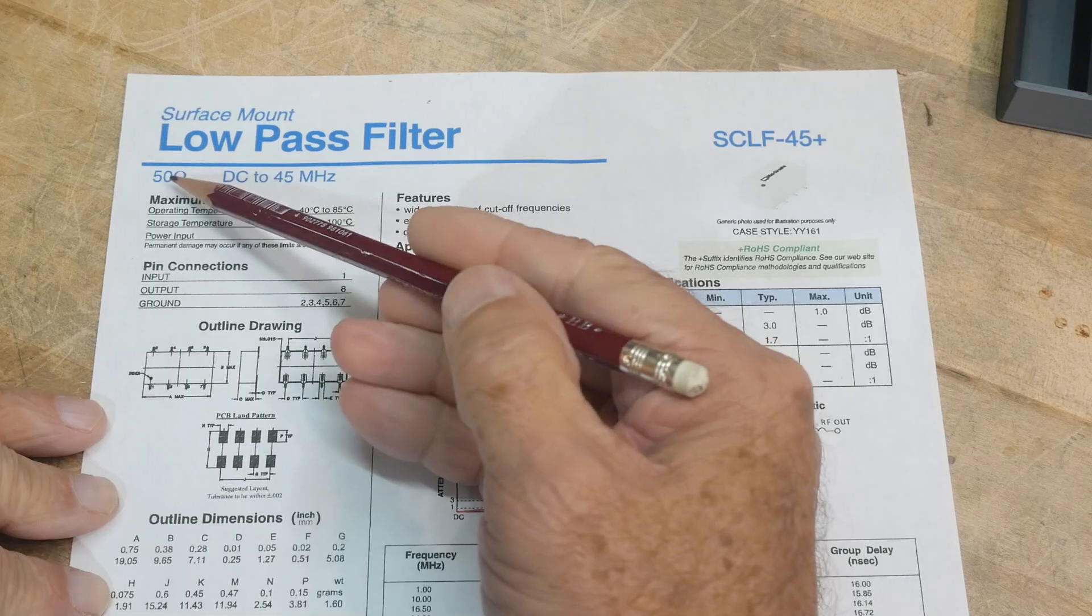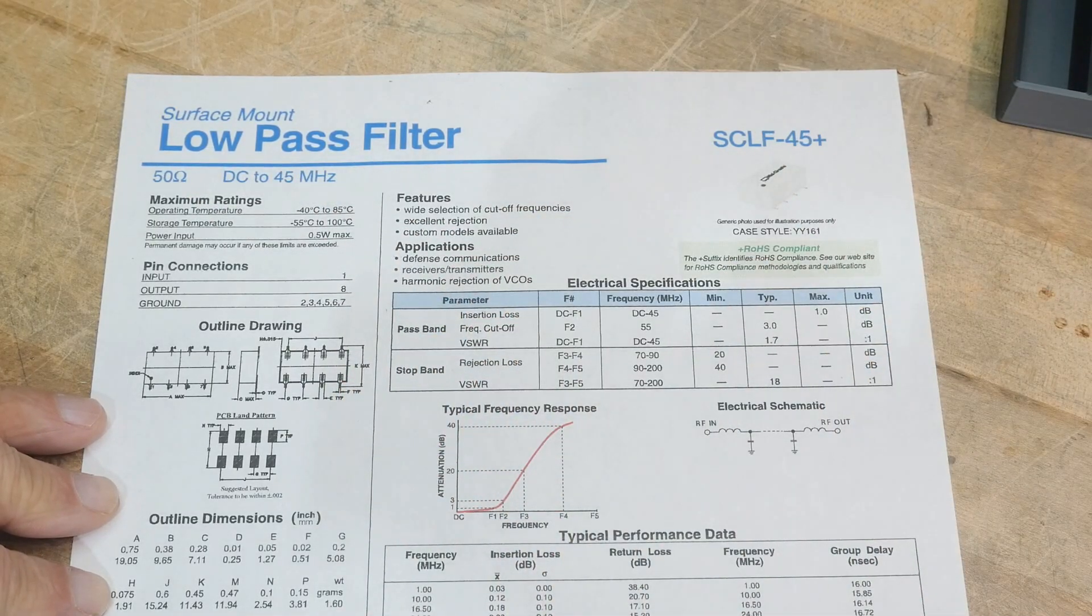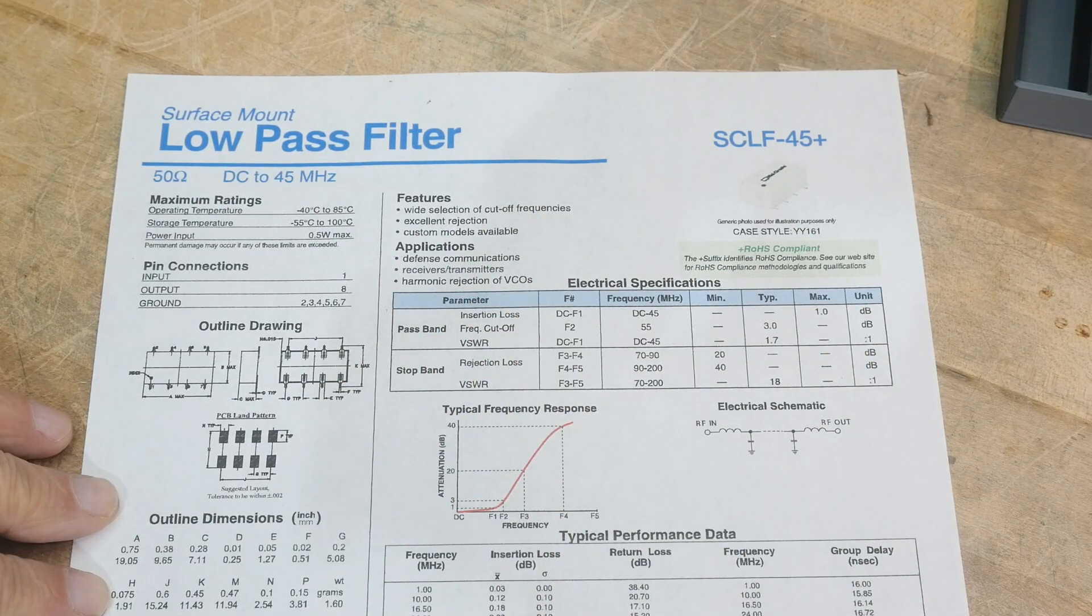So, it says 50 ohms DC to 45 megahertz, I guess that's the dash 45, and low-pass.